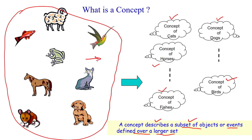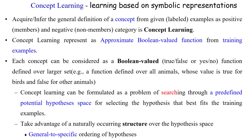From the large set of training examples, a subset of events or subset of objects is derived, which is called a concept — that is what is being learned. The learning system gains knowledge from the large set of training examples to categorize given animals. Concept learning is defined as acquiring the knowledge of a particular concept from given labeled examples, which may be positive examples or negative examples.